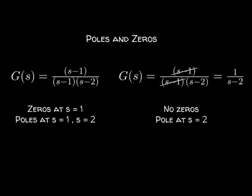From the example transfer function shown here, we can see that this system has a zero at s = 1 and poles at s = 1 and s = 2. Upon further inspection, we see that the zero at s = 1 cancels the pole at the same location, leaving us with only the pole at s = 2.